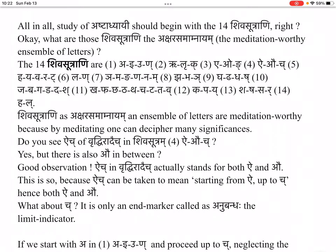By meditating on them, one can decipher many significances. Do you see 'aich' of Vruddhi-rād-aich in Shiva-sutra 4, 'ai-au-c'? Yes. But there is also 'au' in between. Good observation. 'Aich' in Vruddhi-rād-aich actually stands for both 'ai' and 'au'. This is so because 'aich' can be taken to mean starting from 'ai' up to 'c', the anubandha. Hence both 'ai' and 'au'.